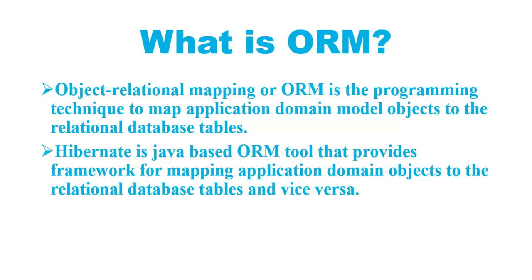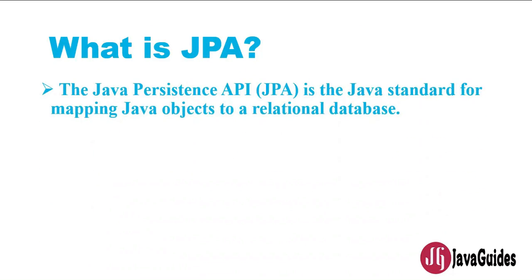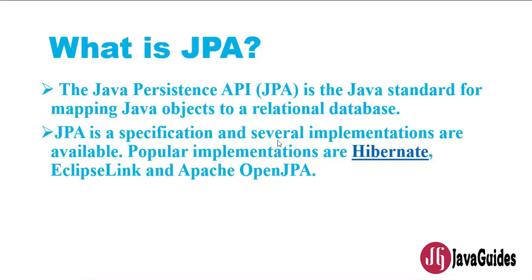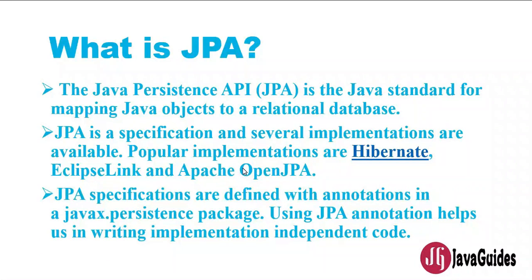JPA stands for Java Persistence API, and it is a Java standard for mapping Java objects to a relational database. JPA is just a specification and it has several implementations — for example, Hibernate, EclipseLink, and Apache OpenJPA. Remember, JPA is just a specification that exposes APIs, and there are several popular implementations available.